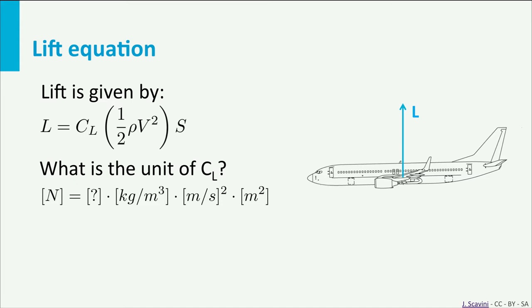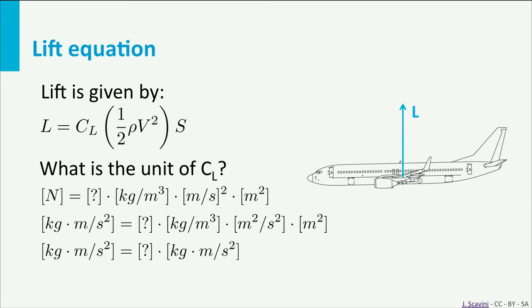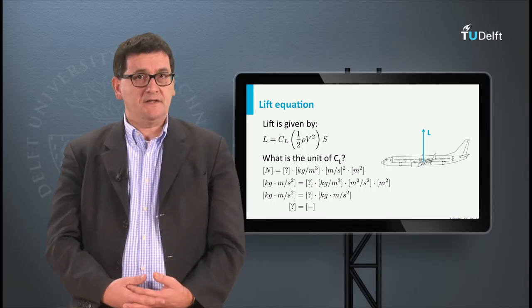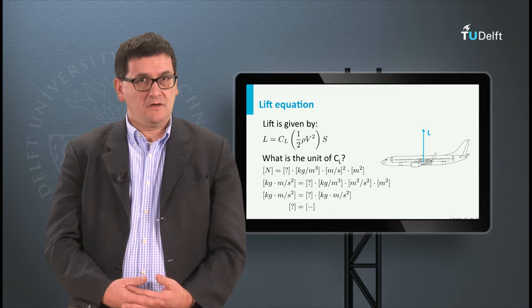First we use a question mark for the lift coefficient. On the left hand side we see newtons and on the right hand side we see kilos per cubic meter times meters per second squared times meters squared. First we replace newtons by kilos times meters per second squared. Next we eliminate as much as possible on the right hand side. It happens that in the end the lift coefficient has no dimension.